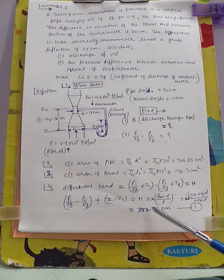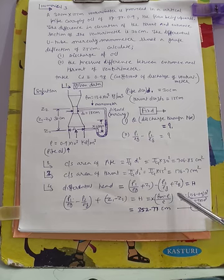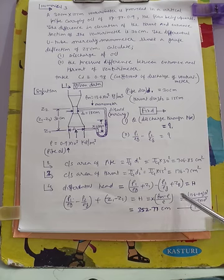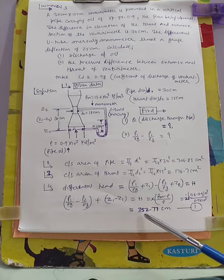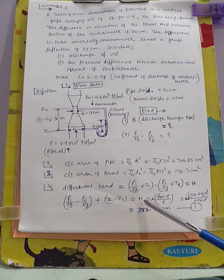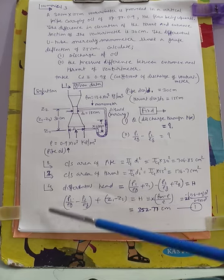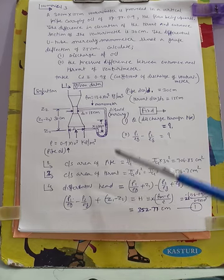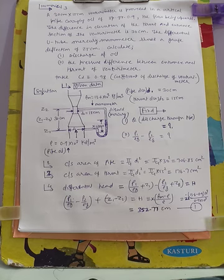The differential head is given by h = x × (ρm − ρ) / ρ. Substituting x = 25 cm, ρm = 13.6 × 10³, ρ = 0.9 × 10³, we get h = 352.77 centimeter. Note that in a horizontal venturi meter, this differential head h is itself the pressure head difference, because the elevation terms cancel to zero in the horizontal case.